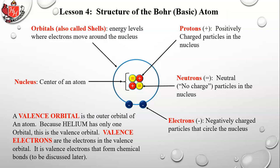Valence means outer. Some elements have two, three, four, five, or six orbitals, and the valence electrons will always be in whichever is the outermost orbital.